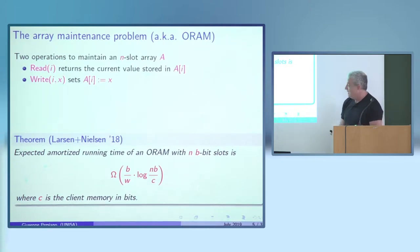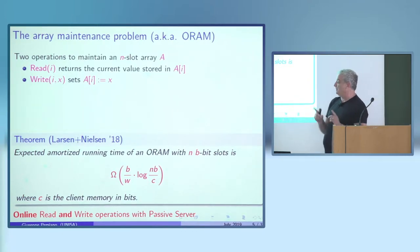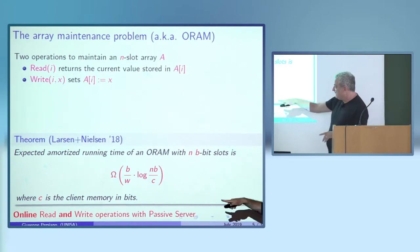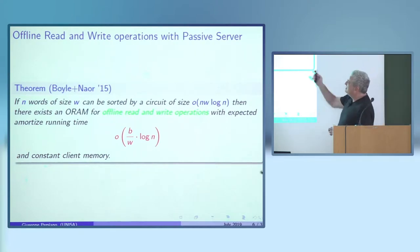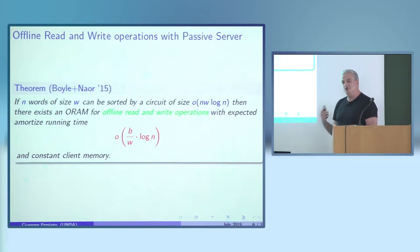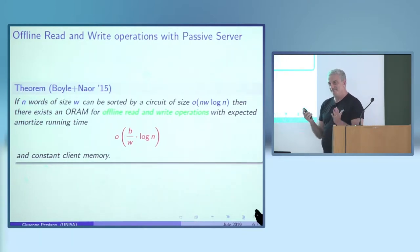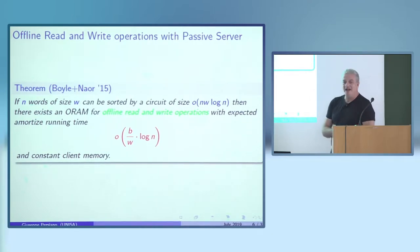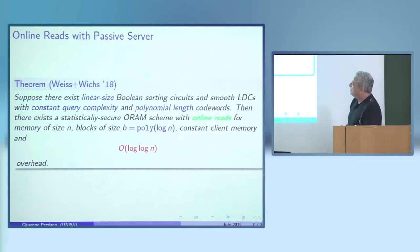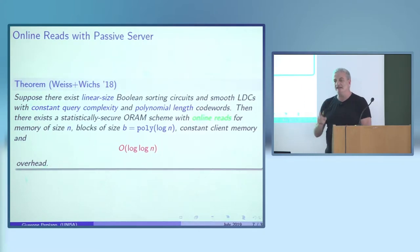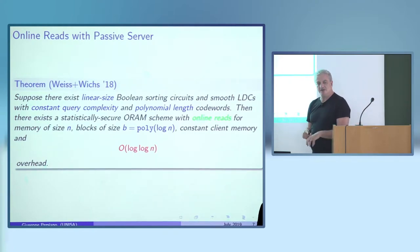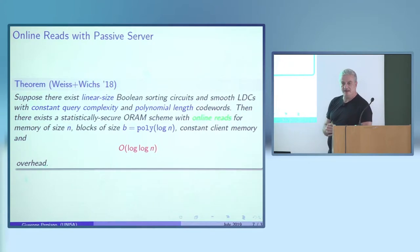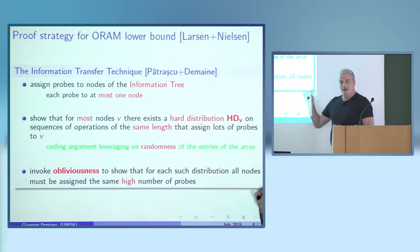This applies to online read and write operations with a passive server. Weakening this in any way causes trouble. A 2015 paper shows that if you can prove a lower bound with offline reads and writes, you shouldn't sell it as an ORAM lower bound but rather as a lower bound on integer circuit sorting, which is an open problem. More recently, if you only have online reads, this implies a lower bound either for integer circuit sorting or for locally decodable codes — both open problems in complexity.